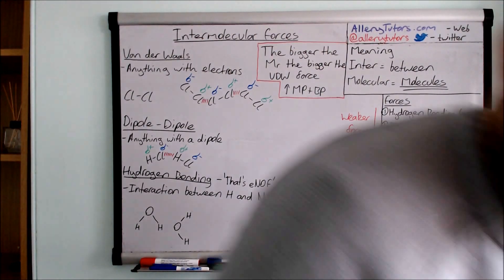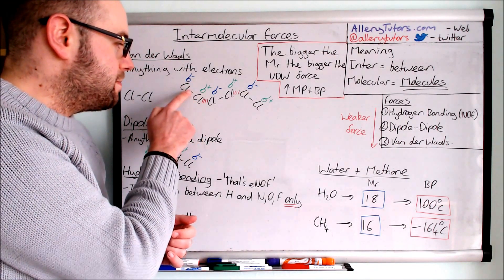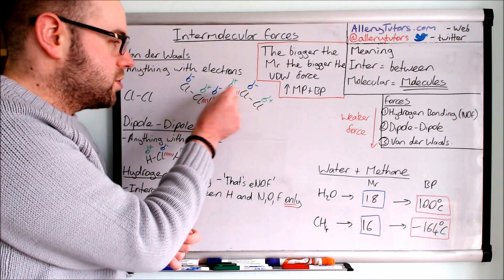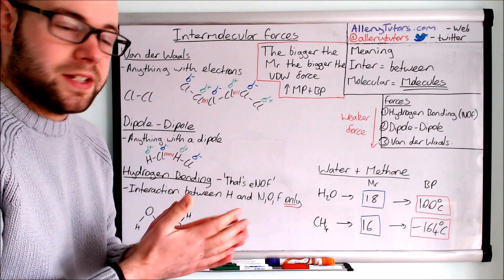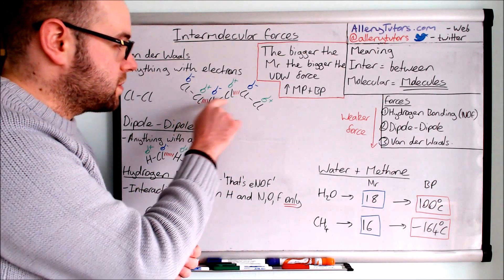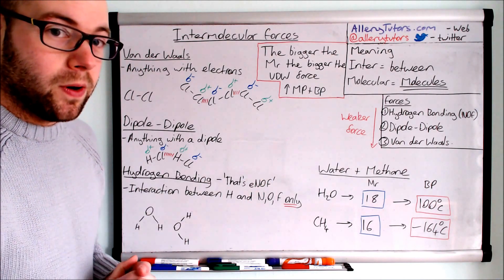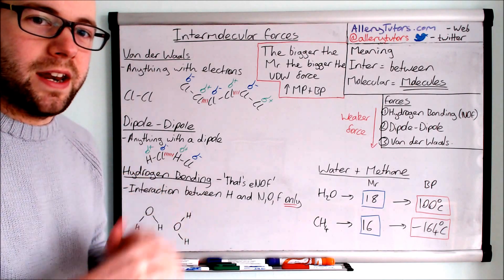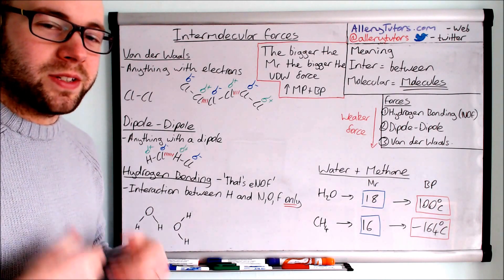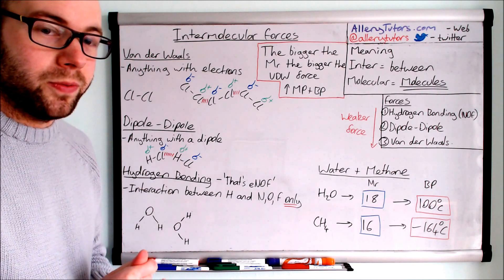Looking back at the diagram, you can see the delta negative and delta positive areas where electrons have bunched up. The neighboring chlorine molecule then pushes its electrons towards the delta positive side. The red line between them represents the weak intermolecular van der Waals force. As soon as the chlorine molecule moves away, the electrons shuffle back — but in a crowded space full of chlorine molecules, some form of dipole will always exist, so these forces will always be present.